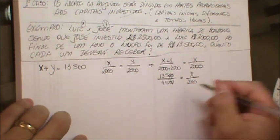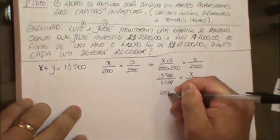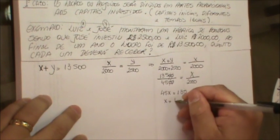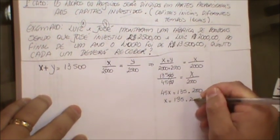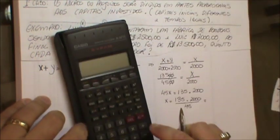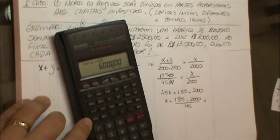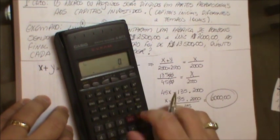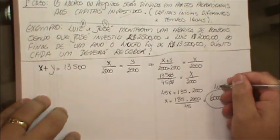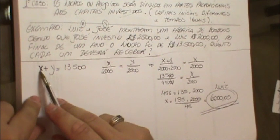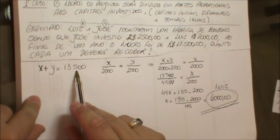Então, 45X é igual a 135 vezes 2.000. Logo, X vai ser 135 vezes 2.000 dividido por 45. Usando a calculadora: 135 vezes 2.000 igual a 6.000. Então X, que equivale ao Sr. Luiz, vai receber R$6.000. Voltando ao dado inicial: o Sr. Luiz e o Sr. José juntos vão receber R$13.500.